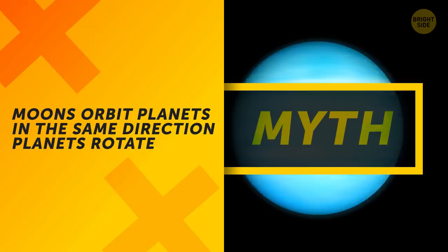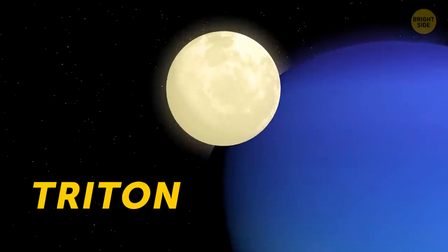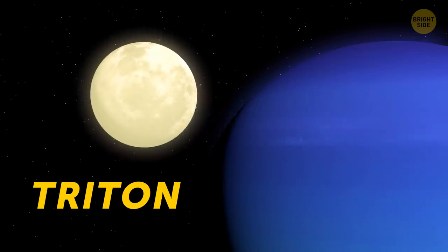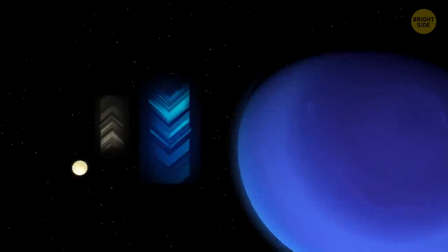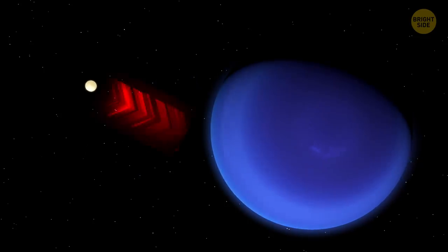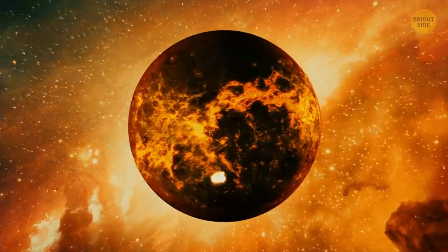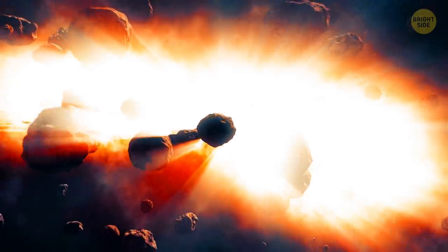Moons orbit planets in the same direction planets rotate. Well, Triton is the biggest moon of Neptune, and it's the only one in the Solar System that goes in the opposite direction. It also gets closer to Neptune with each year, and one day, it'll get smashed by it and become another asteroid ring.